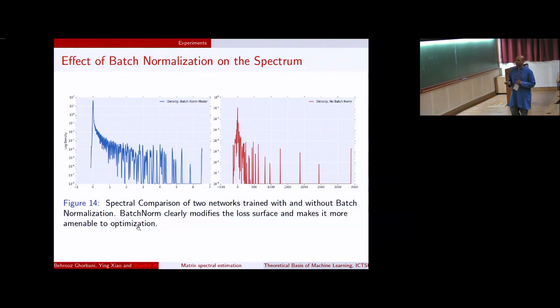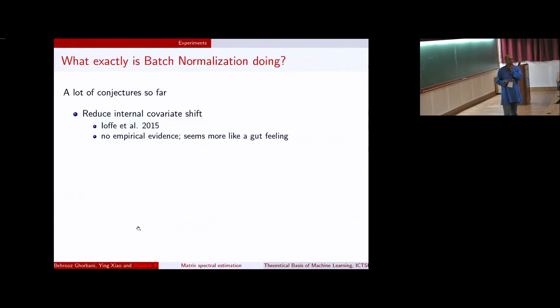Clearly batch norm is doing something to the loss surface, which is making it much smoother or making it more amenable to first-order methods. The question is what? And so far, nobody has been able to give a satisfactory reason for this. So there have been some conjectures. The person who wrote the paper for batch normalization said that it reduces something called an internal covariate shift. That was his justification to do this transformation. It turns out that not only is that doesn't inform us in any meaningful way, it actually is not happening. There is internal covariate shift even with batch norm. So whatever he felt like he wanted to do, somehow he's not doing it, but it's still doing something magical.